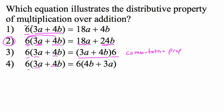Here, in choice 1, they only partially distributed. They multiplied 6 by 3a and got 18a, but not by 4b. They made a mistake there. So these are not equal.